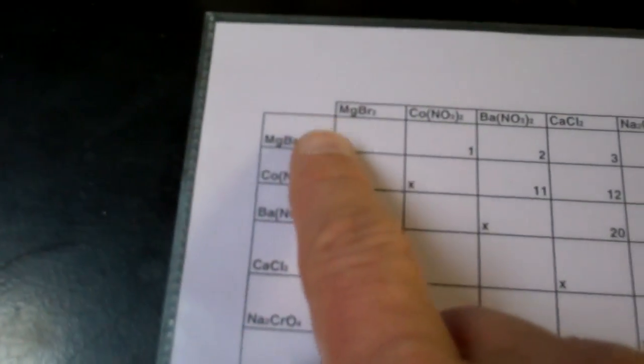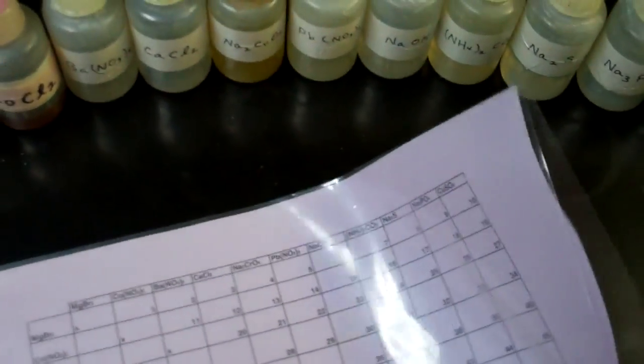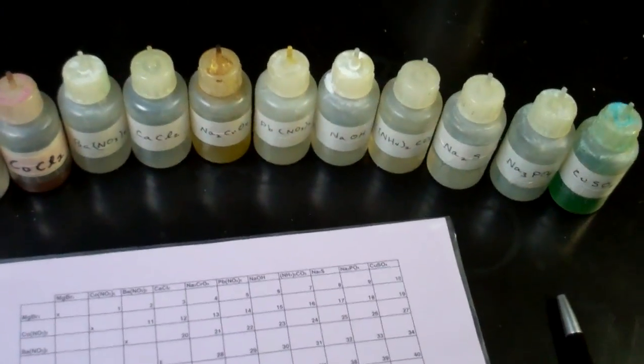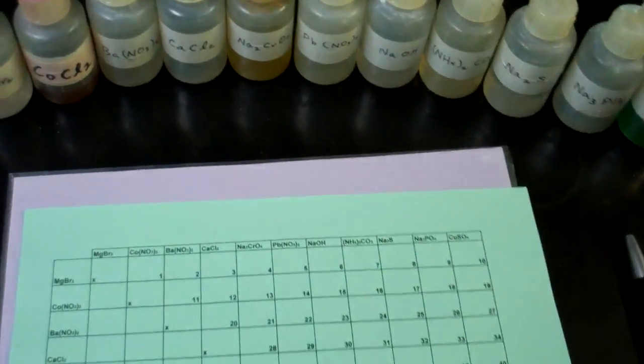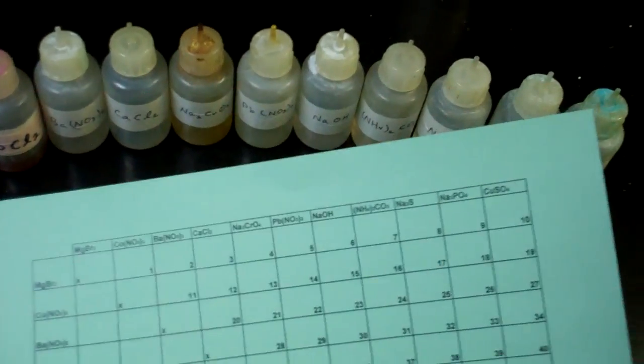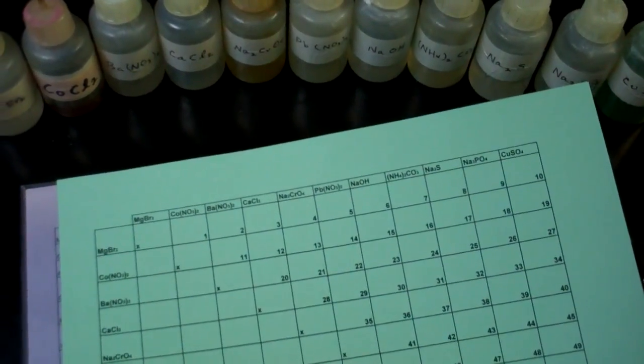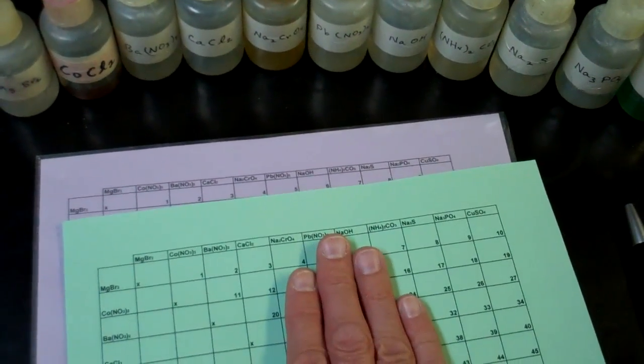These are the same solutions that we have on our data table going across and also down the side. Now, the copy of your data table is placed inside a sheet protector. You'll see why in just a moment, and yours is purple. You'll also receive, for your use, a green data table. That's really not green for any reason other than I thought it would be different and fun to use green paper today.